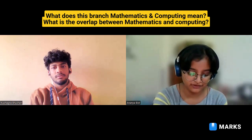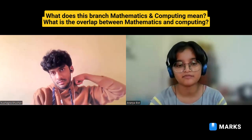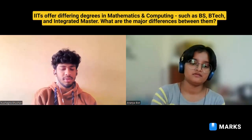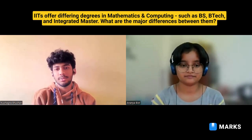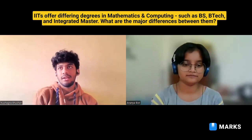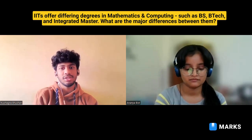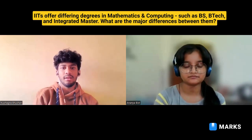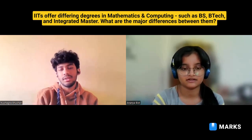Mathematics and Computing is offered in different degrees such as BS, BTech, and Integrated MTech. The major difference is that BTech and BS are four-year courses while the Integrated Masters is a five-year course. Syllabus-wise and academically, there isn't much difference between MTech, BS, and BTech courses. The only difference is that MTech students stay for an extra year and complete a thesis at the end of their final year.